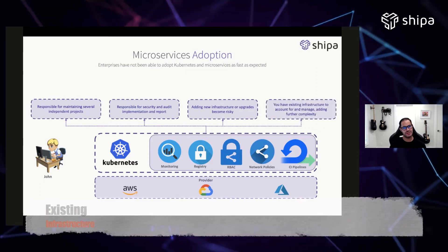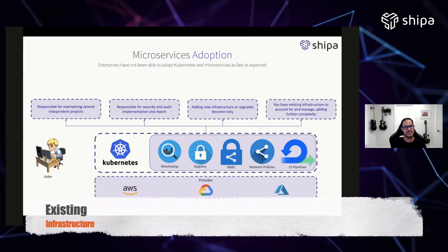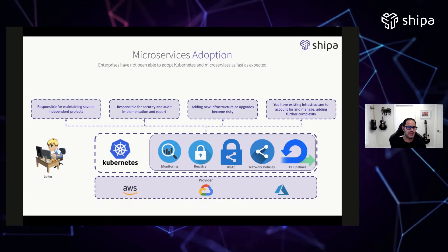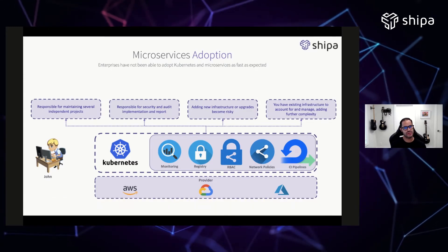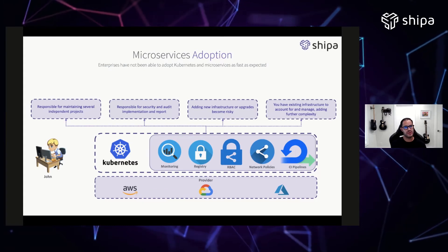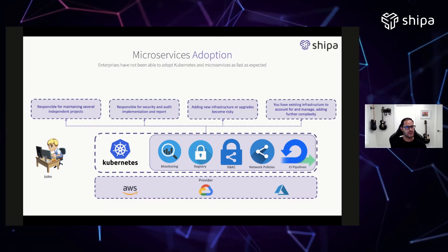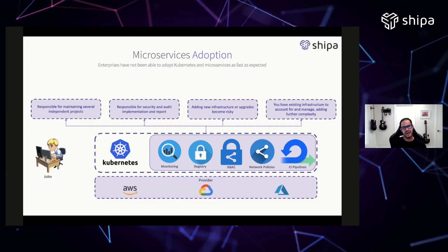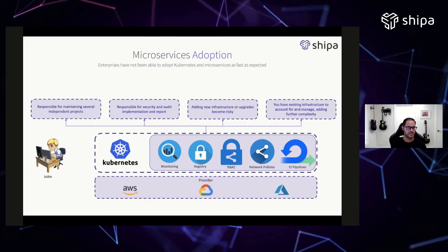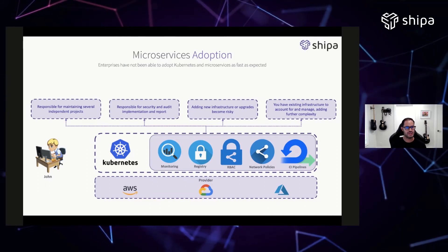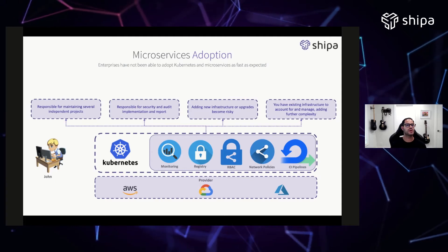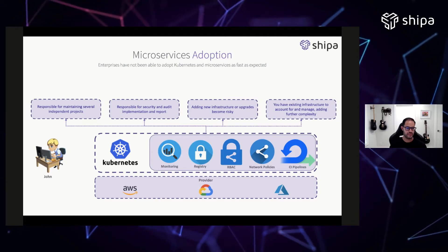Last but not least, John knows he has a lot of existing infrastructure. As much as he likes the idea of moving to Kubernetes, he understands there are still a lot of VMs sitting around in the cloud or locally. The platform he's building is geared towards Kubernetes only, which adds one more huge component for him.